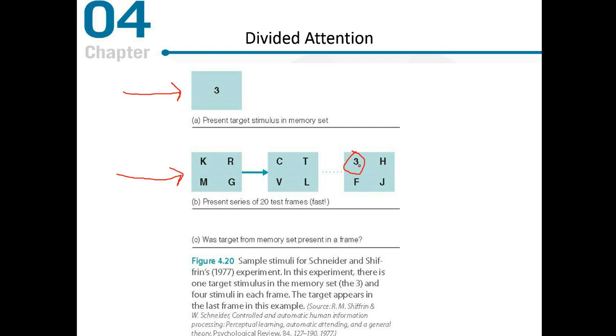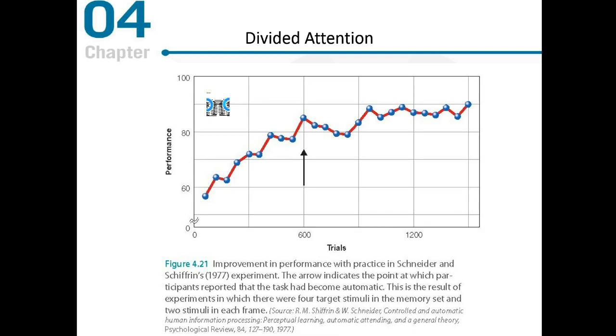So how well do participants do at this? This is a task that's very difficult because you're trying to keep this number in memory and you're seeing all of this very rapidly presented stimuli, and you have to figure out which one of these test frames has the target stimulus. Well, it turns out that over time participants got better. There was definite improvement in performance over time, as you can see in this graph.